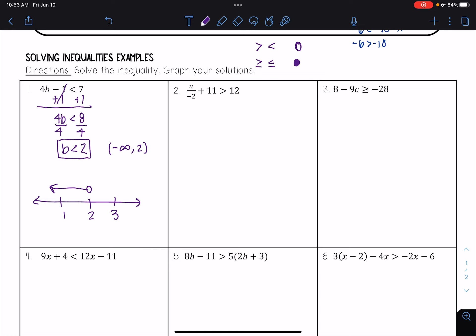Okay, let's look at number 2. So I have n over negative 2 plus 11 is greater than 12. Well, first step to get n by itself is I want to subtract 11 from both sides.